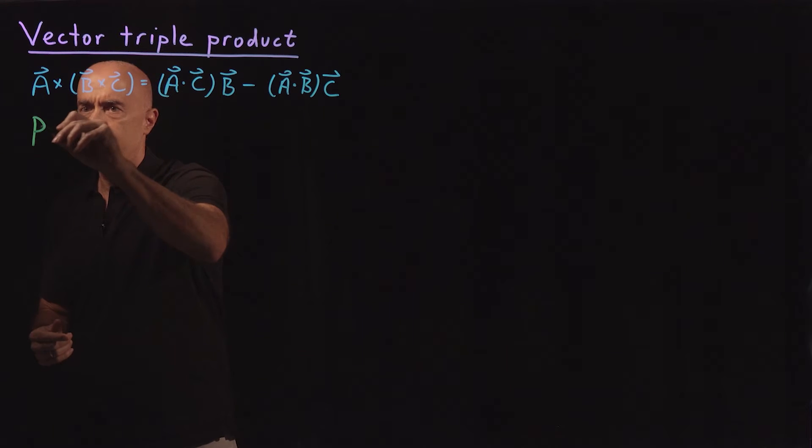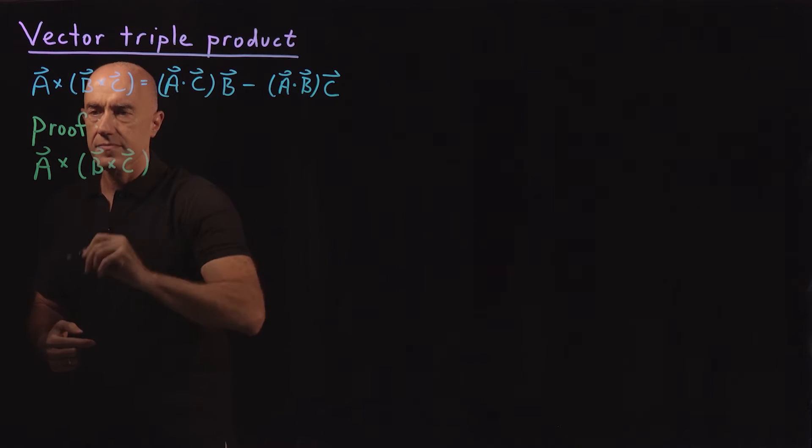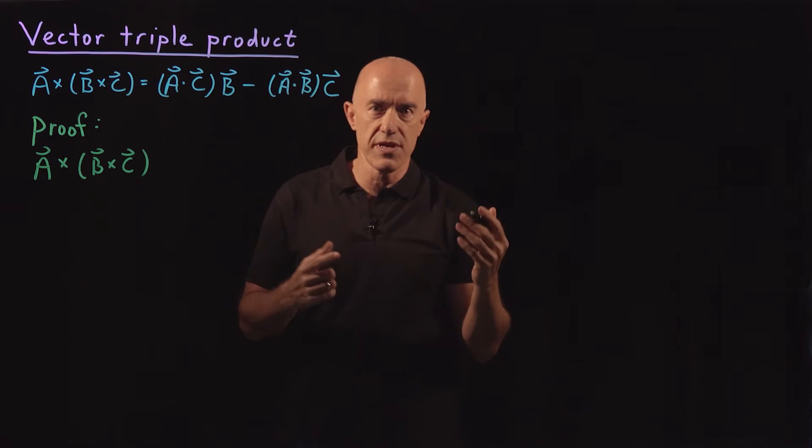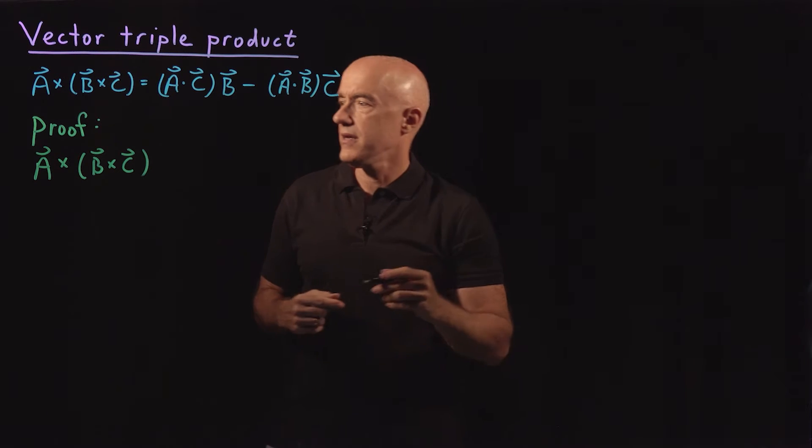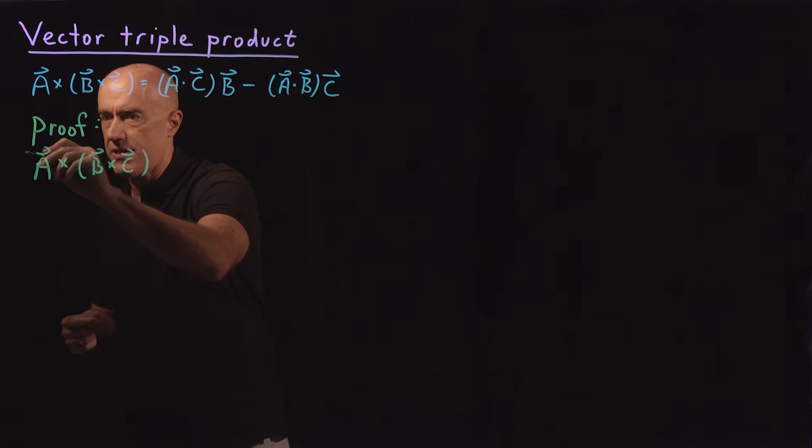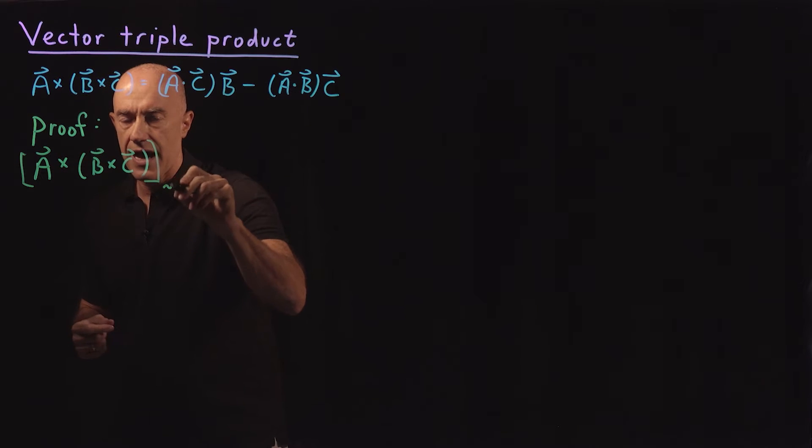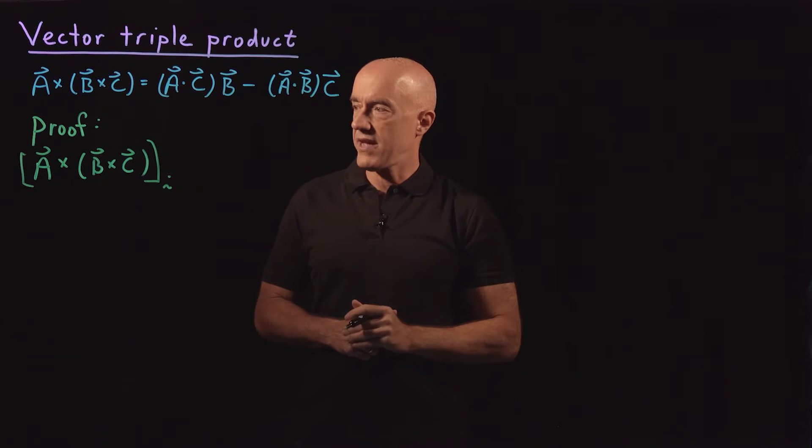So let's work the proof. We start with the left-hand side, A cross B cross C. And we're going to prove this for each component. So we're going to prove this for the i-th component of that vector.